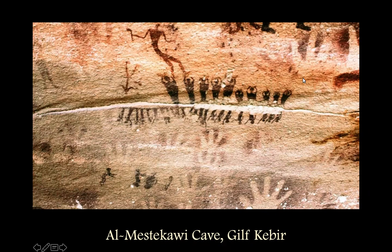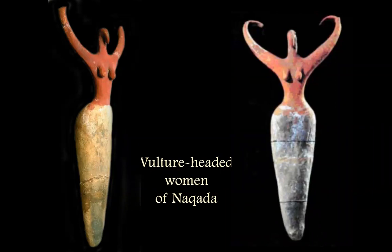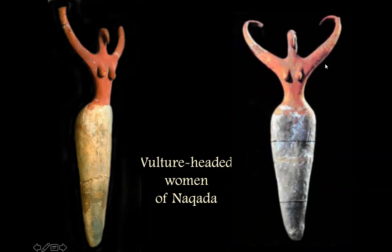Many of you will have seen the vulture-headed goddesses, as they're often called — figurines that are often brightly painted with red-brown ochre and then clothed, the lower part of the body in a white linen wrap, with a bird face, vulture face, and the arms curved — not really as much arms as wings. They've also been compared to the horns of African cattle.